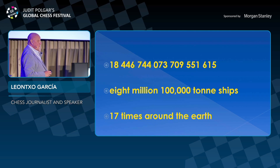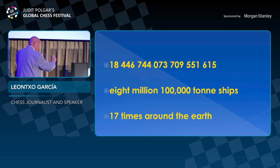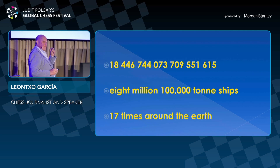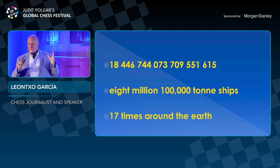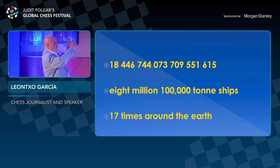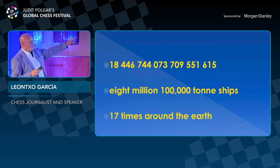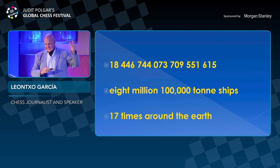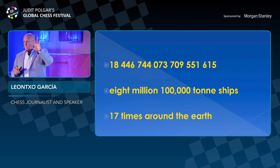At the end you have an enormous number of grains — I am unable to read it in English because in Spanish one billion is one million of millions, while in English one billion is one thousand million. If you put all those grains in enormous ships, you would need eight million ships to store them. If you put all those ships in a queue in the sea, the queue would be 17 times around the Earth. Please remember these big numbers — this is the concept.